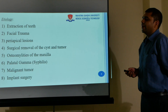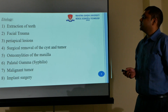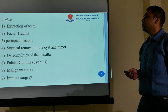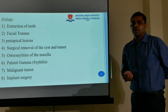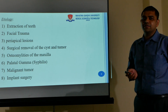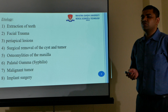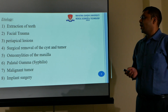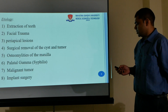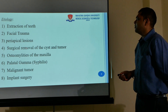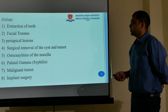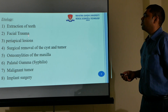The etiology behind this: first, extraction of teeth — if there is a communication between the sinus and the oral cavity immediately after extraction, this causes oral-antral communication. Second is facial trauma; any fracture of the maxilla causes rupture of the maxillary sinus, creating a communication between the oral cavity and the sinuses. Third is a periapical lesion at the apex of a root within the maxillary sinus, which can cause perforation and oral-antral communication.